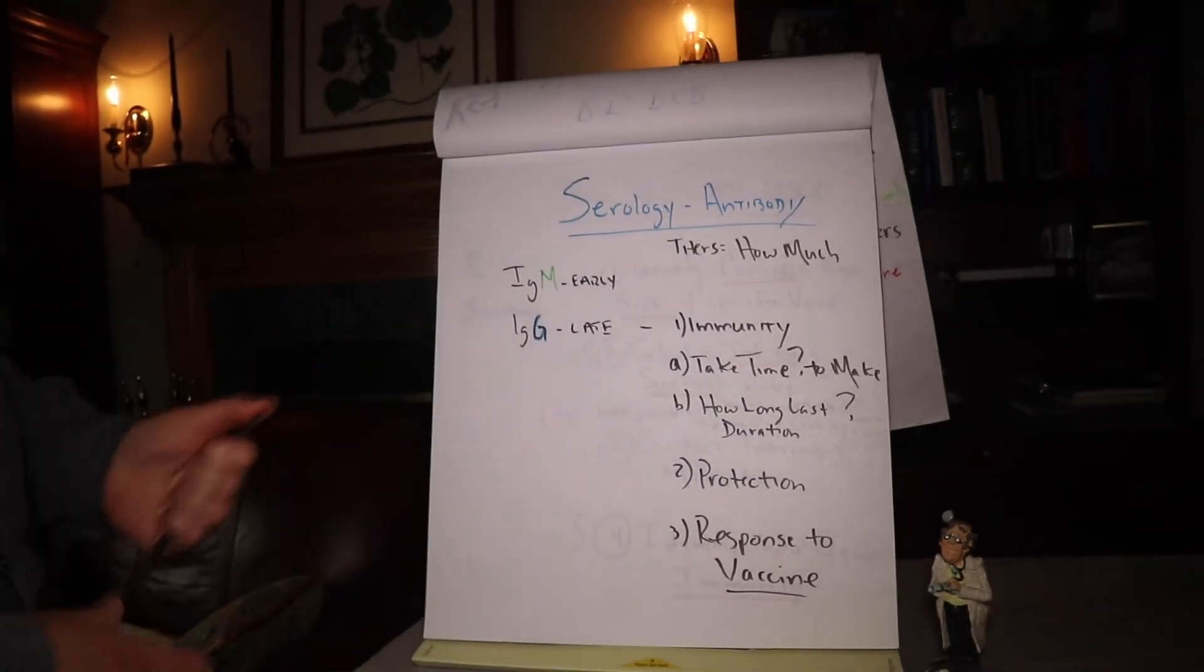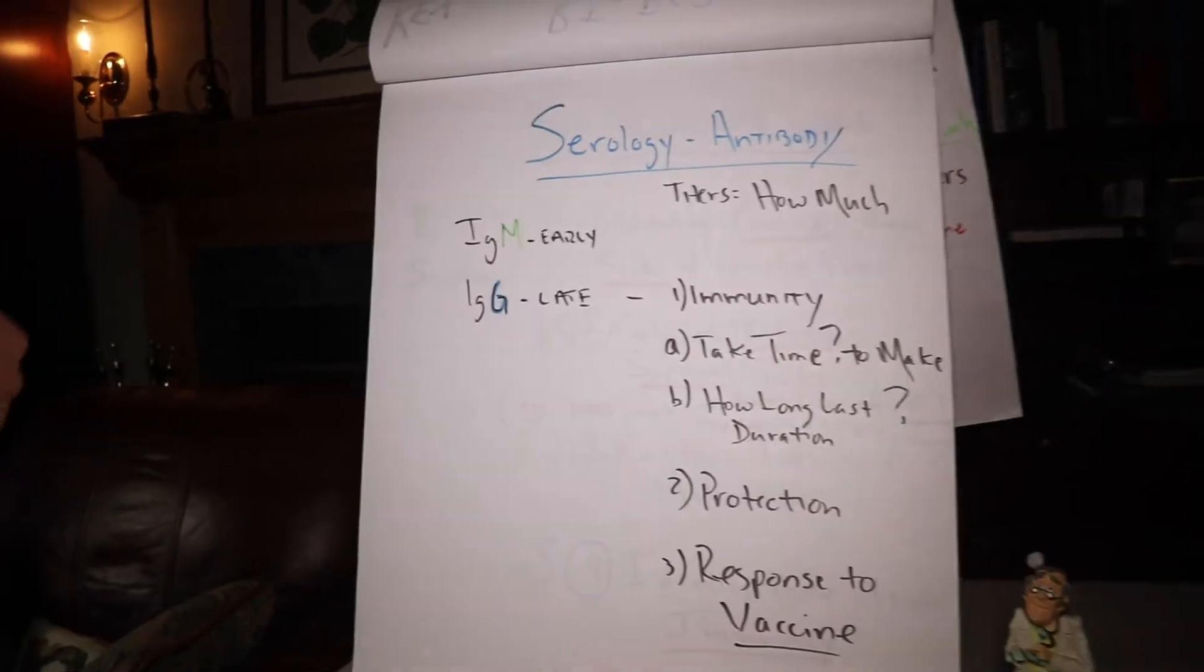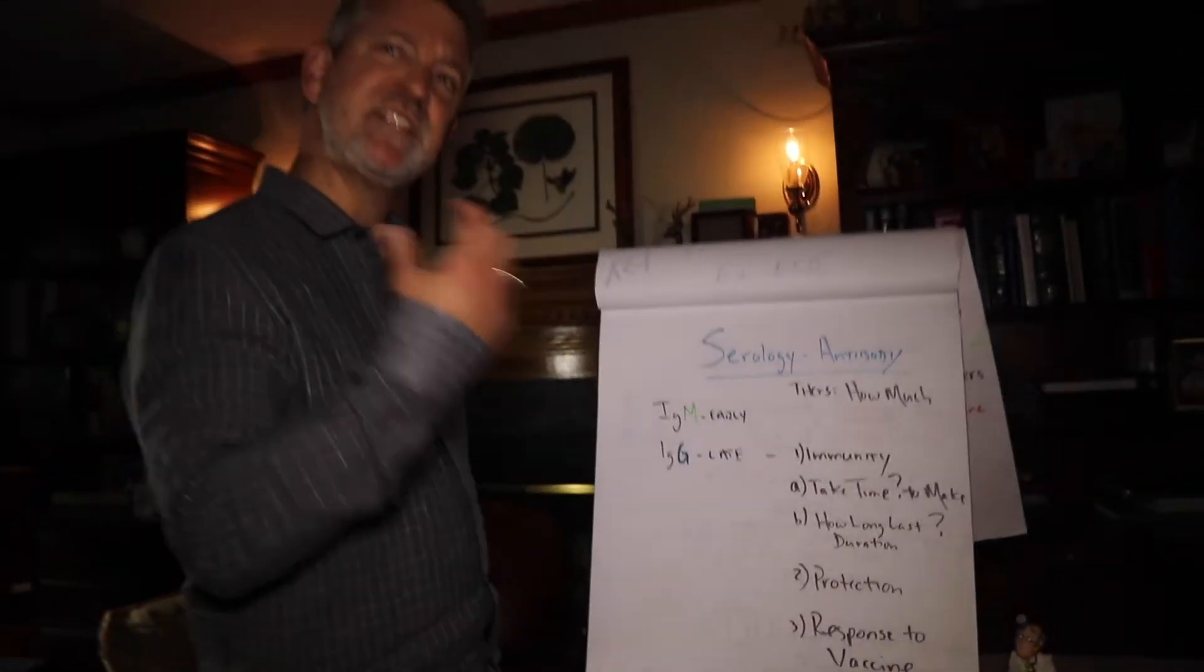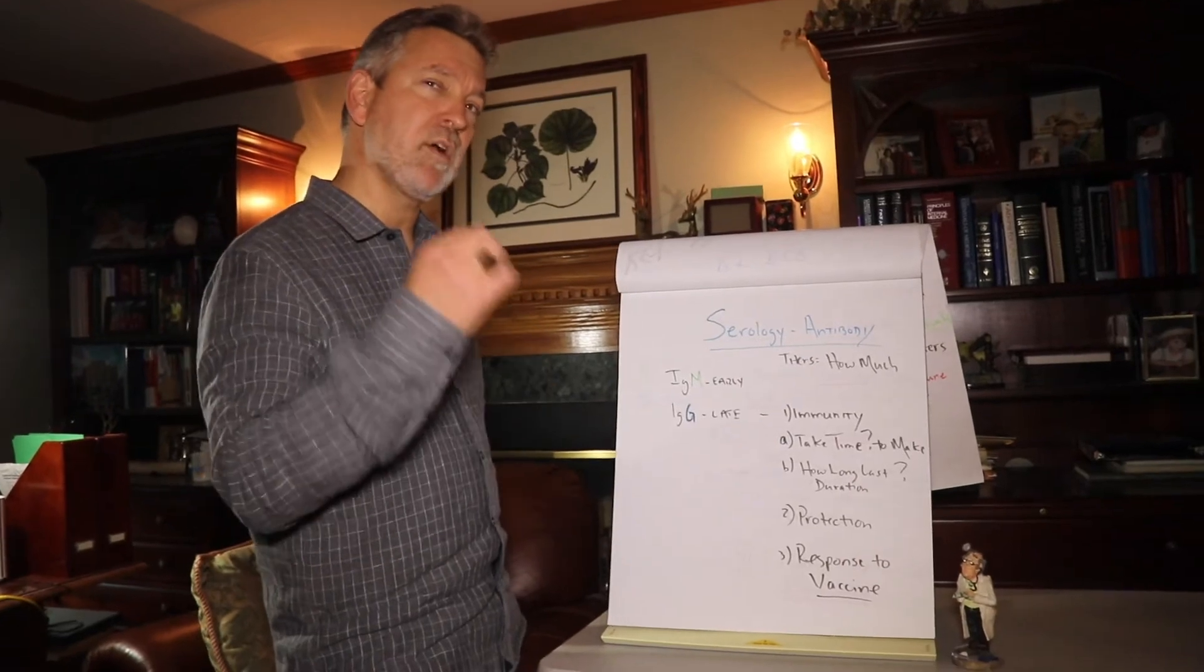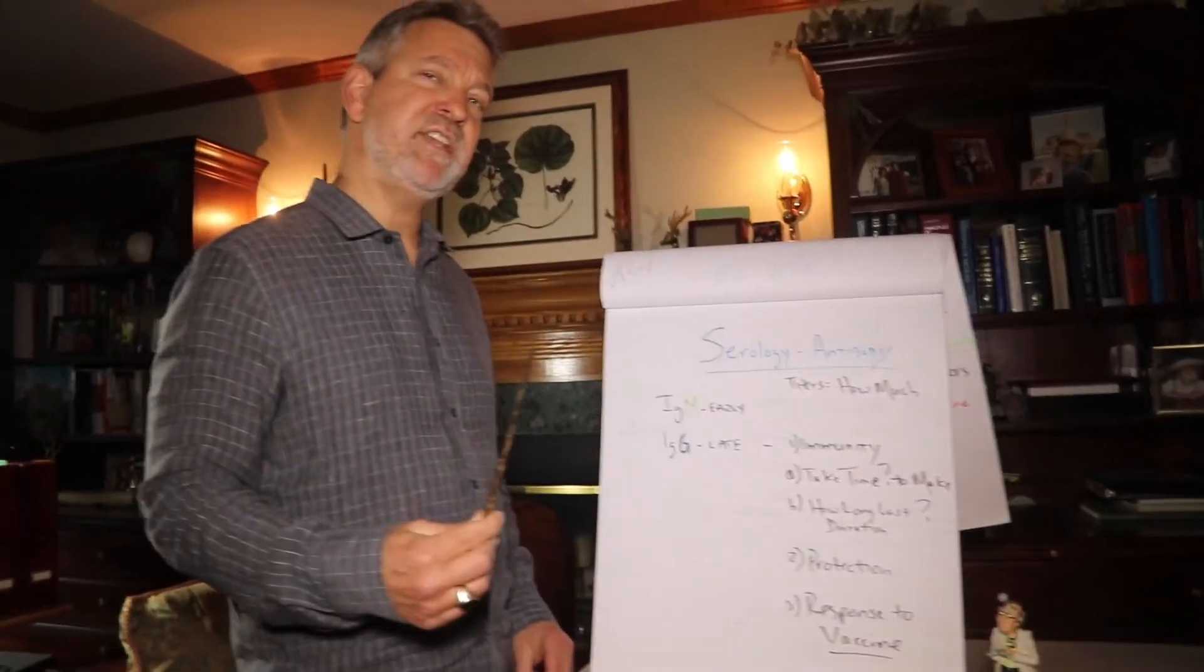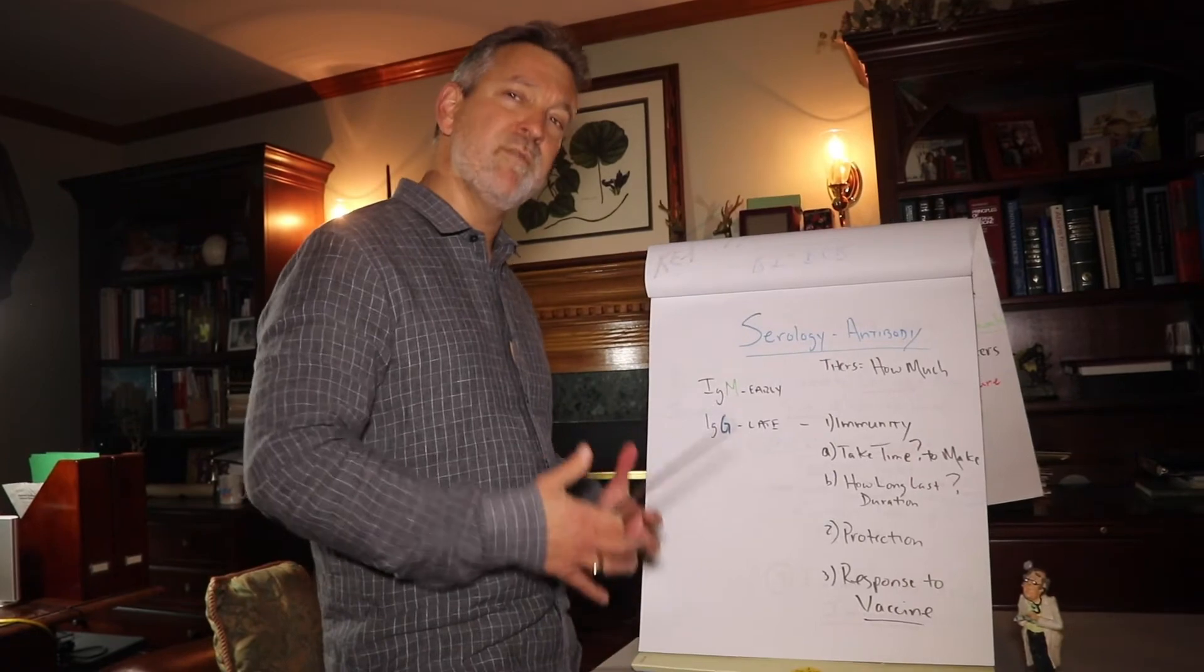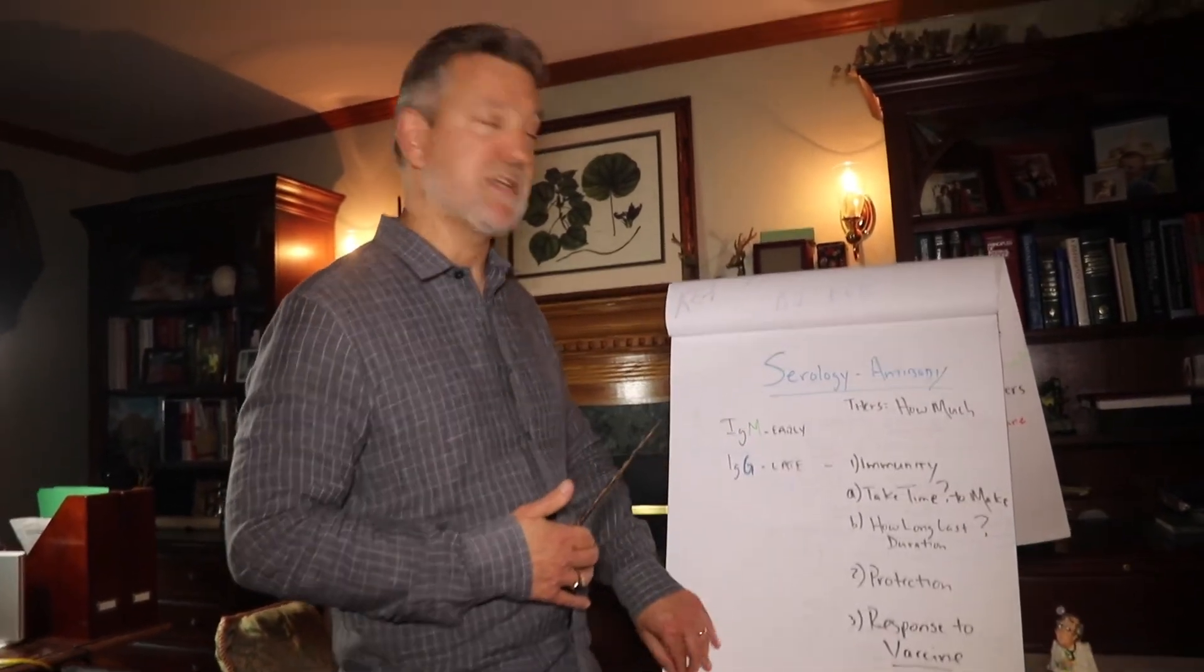The serology or antibody tests, remember again, the early one and the late, measure how much are the titers. This gives us a sense of our own body's immunity. What we don't know is how long does it take for this to be made, and how long will it last? These are important questions. And which antibodies are important to give us a defense or protection? And when we get a vaccine going, this will help us understand how we built a good boost of our immune system by measuring these antibodies to a vaccine that will boost our system, give us antibodies that will last, and protect us the next time.